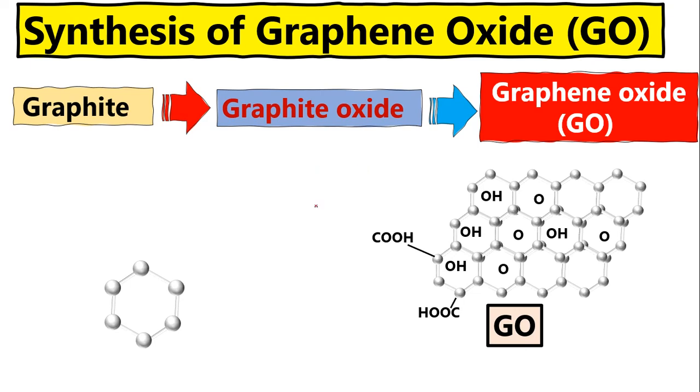In this video I'm going to talk about how to synthesize graphene oxide. We have talked a lot about graphene and its derivatives such as graphene oxide and reduced graphene oxide, but in this video I will be talking about how we synthesize and make graphene oxides for different applications.